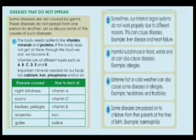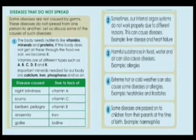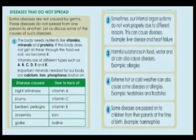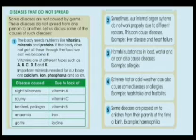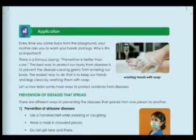Fourth, extreme hot or cold weather can also cause some diseases or allergies — for example, heat stroke or frostbite. Fifth, some diseases are passed on to children from their parents at the time of birth — for example, hemophilia. These are all diseases which cannot be spread from one person to another.